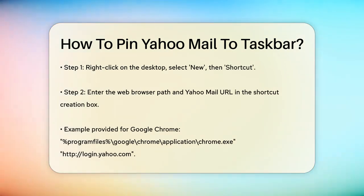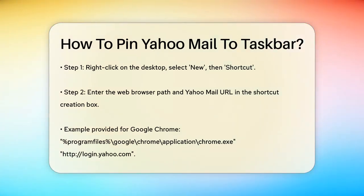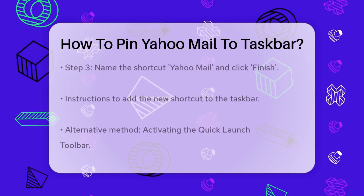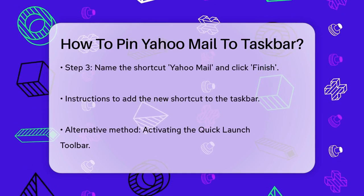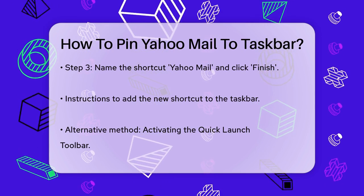Here's how you can do it. Right-click on a blank area of your desktop and select New and then Shortcut. In the Type the Location of the Item box, enter the path to your web browser followed by the URL for Yahoo Mail. For example, if you're using Google Chrome, you would enter: C:\Program Files\Google\Chrome\Application\chrome.exe --url login.yahoo.com. Click Next, give your shortcut a name like Yahoo Mail, and then click Finish.